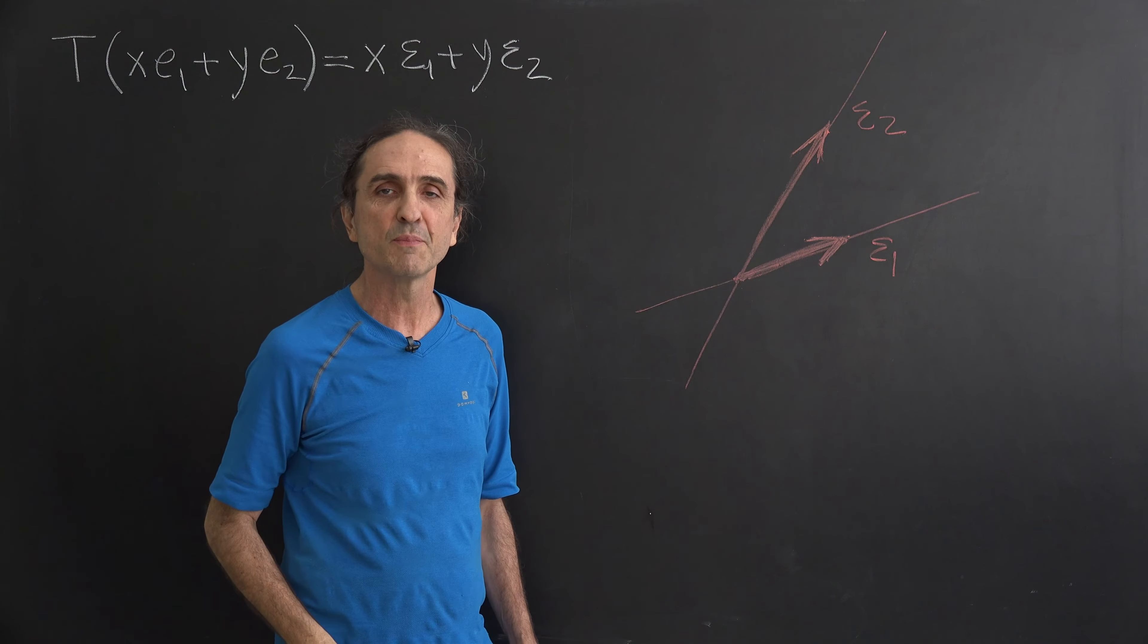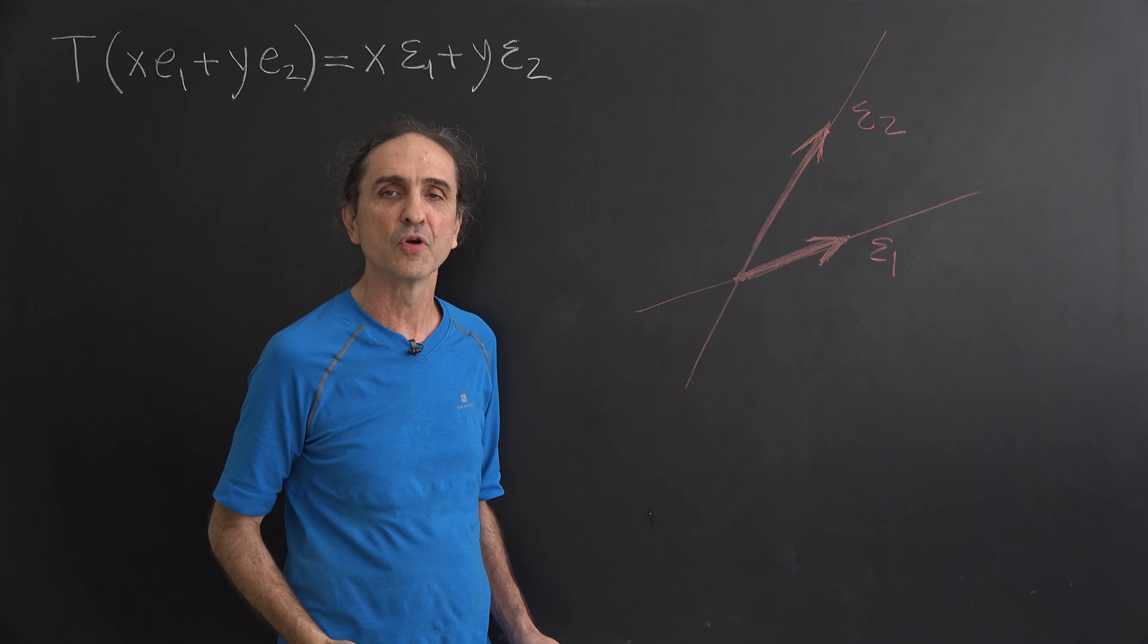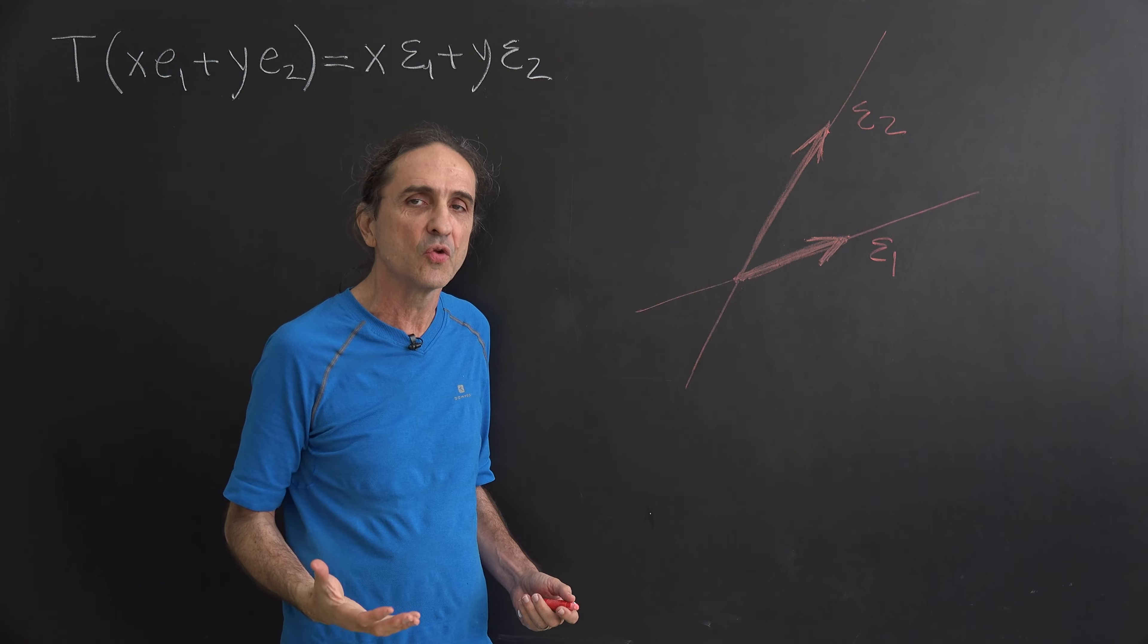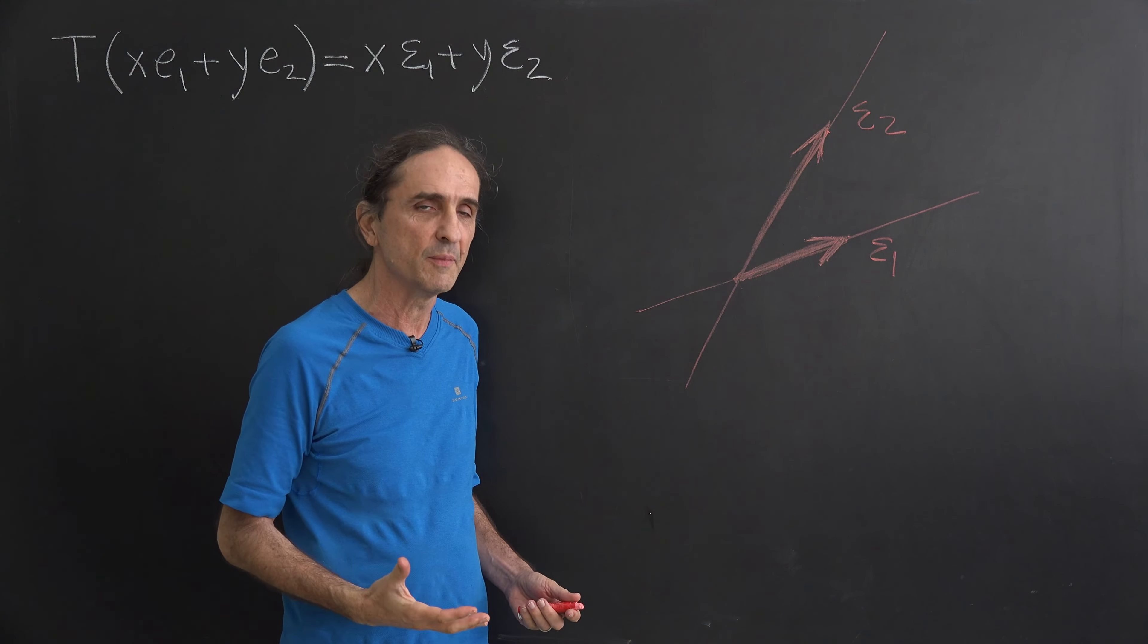Está aqui o nosso sistema de base Y1 e Y2. Mas o nosso plano tem um sistema de coordenadas canônico. Vamos desenhar esse sistema.